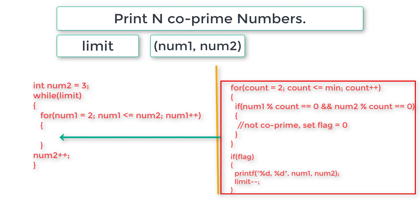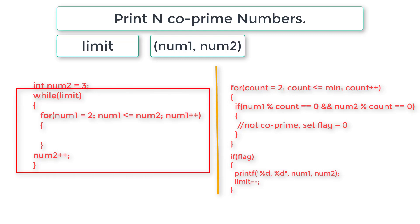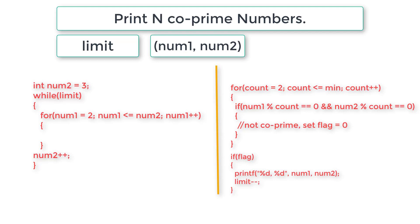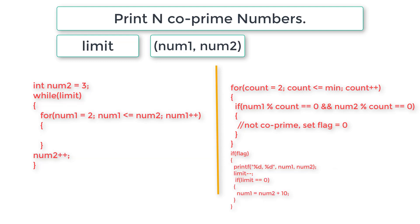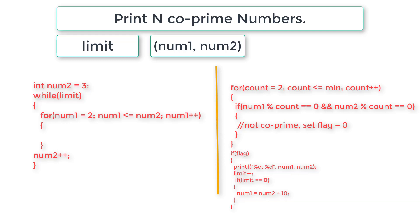The while loop needs to exit, but limit-- is inside a nested for loop, not directly under the while loop. So we need to check: if limit equals 0, we must make num1 greater than num2 to exit the outer for loop. We write: if(limit == 0) num1 = num2 + 10, which makes num1 greater than num2, causing the for loop to exit and the while loop to exit as well.